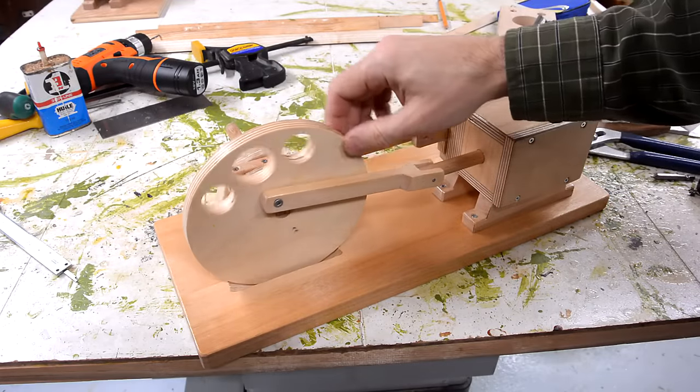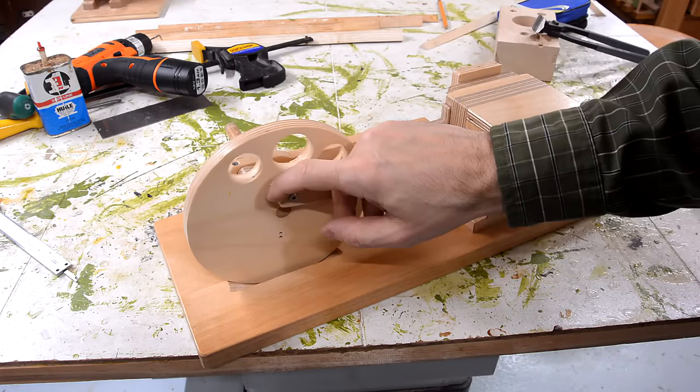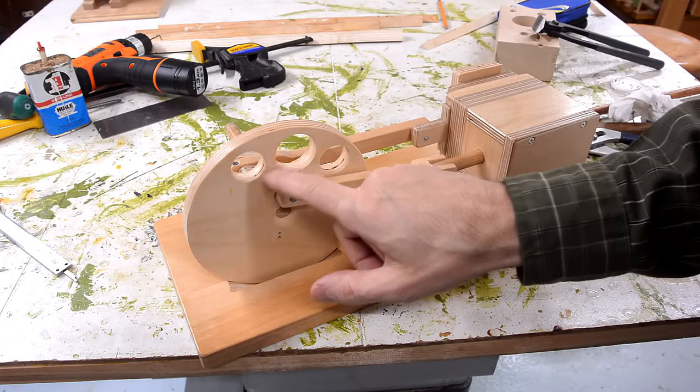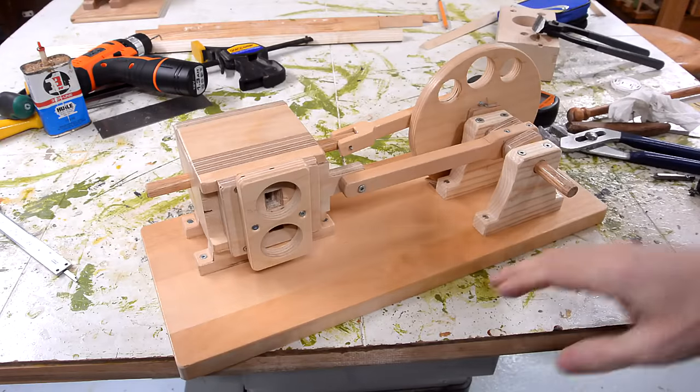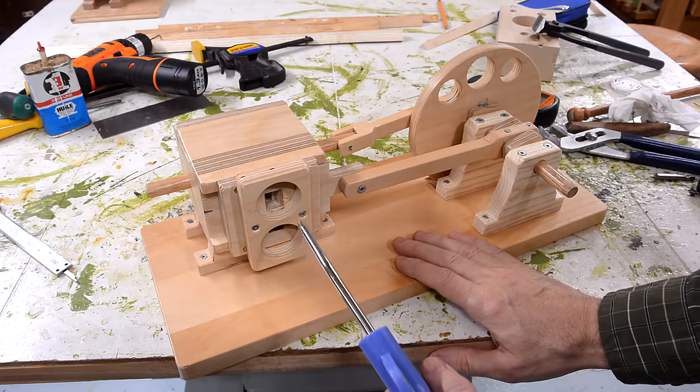One final thing, I realized I put the connecting rod on the wrong side of the flywheel. It needs to be on the same side as the holes that lighten it to compensate for the weight of the piston. And, with this configuration, it shakes a lot less.